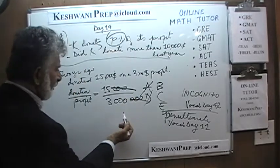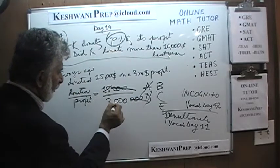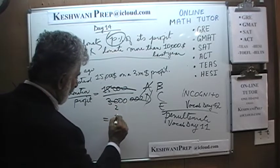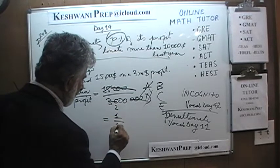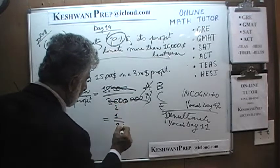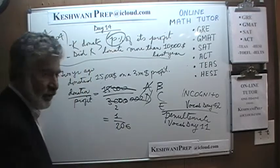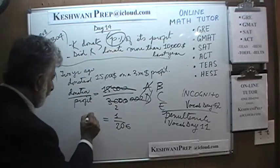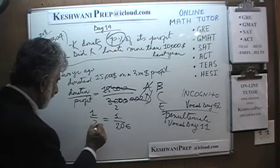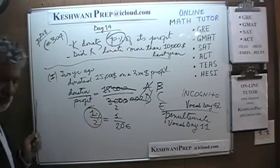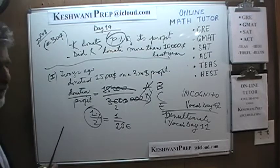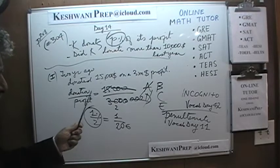But since we started it, let's finish: three zeros cancel, and 15 goes into 3,000,000 — it's 1 over 200, which is half a percent. They donate half a percent. But that was a waste of time — don't do this in a real exam. Just realize that it can be done.